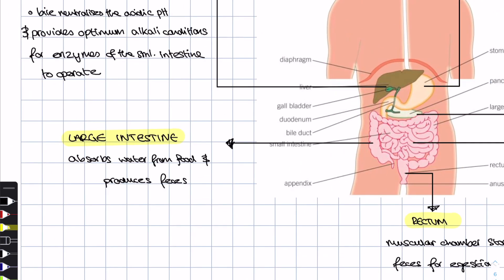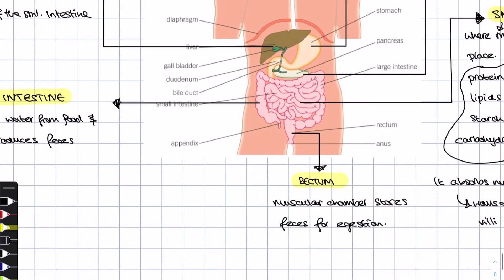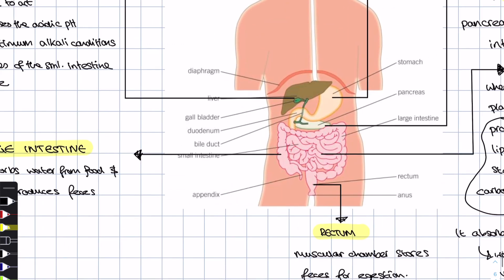Now after food is done in the small intestine, it's going to pass into the large intestine. This is where water is absorbed from the food and it leaves behind that waste product called feces, which is then stored in a muscular chamber called the rectum. And then we go to the toilet, obviously. In biology, we call that process egestion.